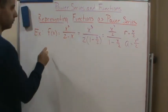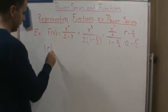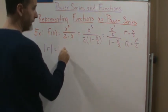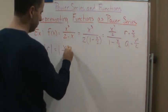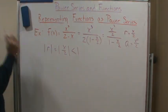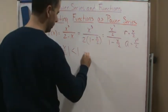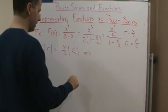the absolute value of r, which equals the absolute value of x over 2, has to be less than 1, which means that...